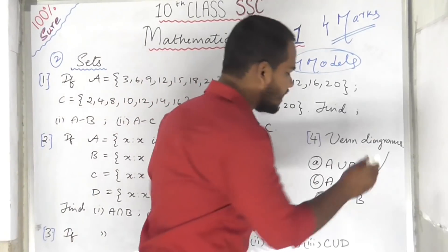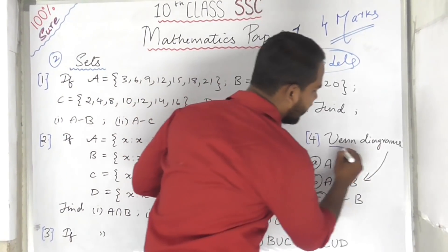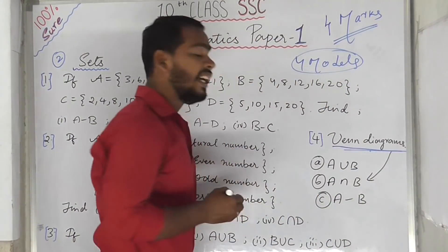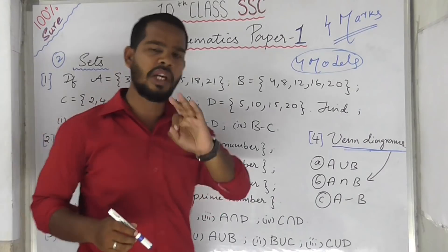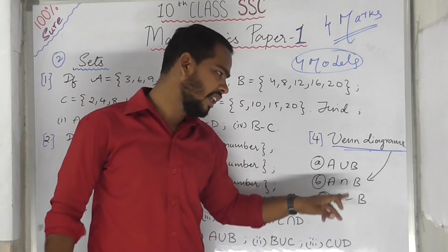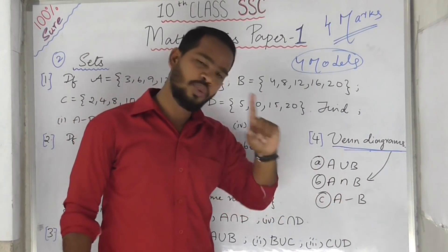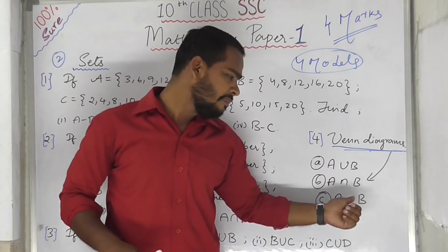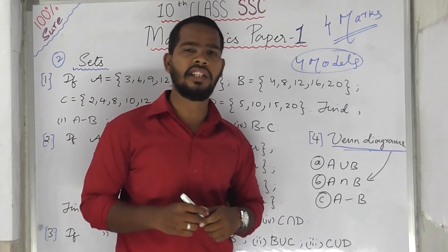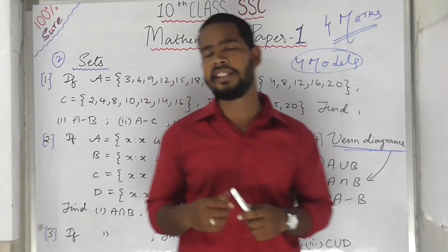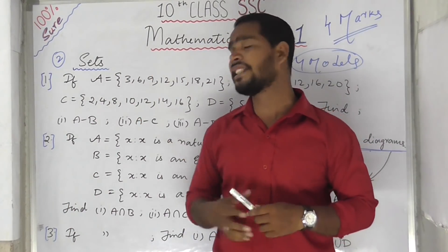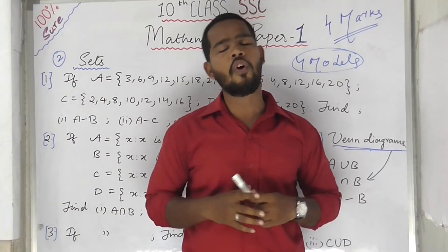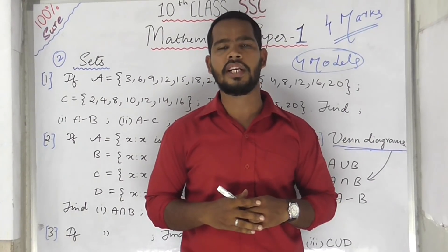The last and very important model in sets is Venn diagrams. You need to represent union, intersection, and minus using Venn diagrams. Remember to note these carefully. We have 4 important models in the sets chapter.